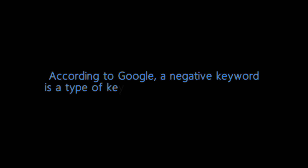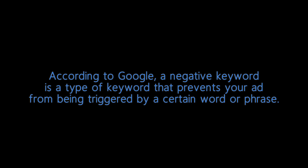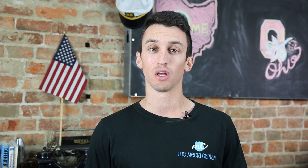Number one: negative keywords. According to Google, a negative keyword is a type of keyword that prevents your ad from being triggered by a certain word or phrase. It tells Google not to show your ad to anyone who is searching for that phrase. Make sure to create a list of negative keywords, which can include competitor keywords, the word free, how to, cheap, or any other search term you are confident would not convert into a sale for your business.